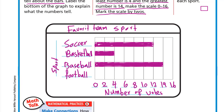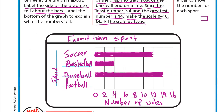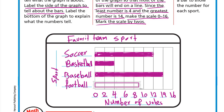The last sport is football. Let's count: 5, 6, 7, 8, 9 — football is 9. Since 9 falls between 8 and 10, the bar should reach the middle between those two lines. We shade it, and that's how we draw the bar graph.